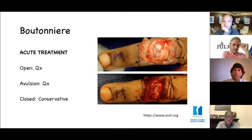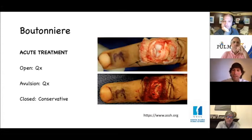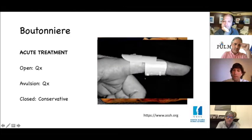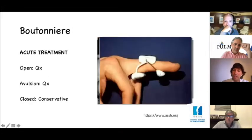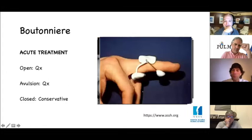For acute treatment: if open, we debride and suture the tendon. If there's an avulsion, we anchor the bony fragment using a method depending on bone size. For closed injury, we treat conservatively with a Bunel splint for six weeks, leaving the DIP free to perform exercises and avoid retraction of the oblique retinacular ligament. Then we use a dynamic splint during the day after six weeks, and may keep a static splint at night for two to four more weeks.